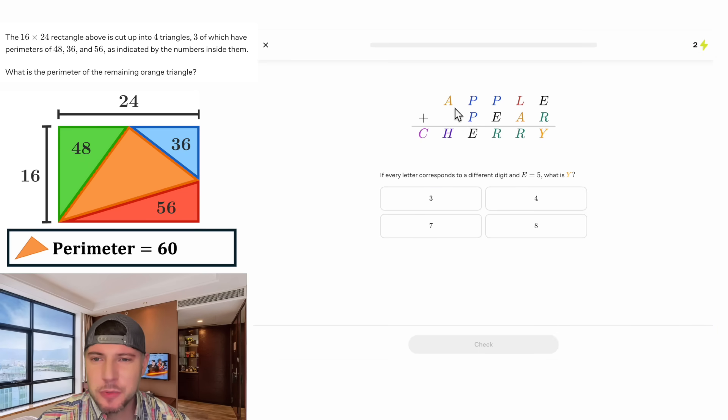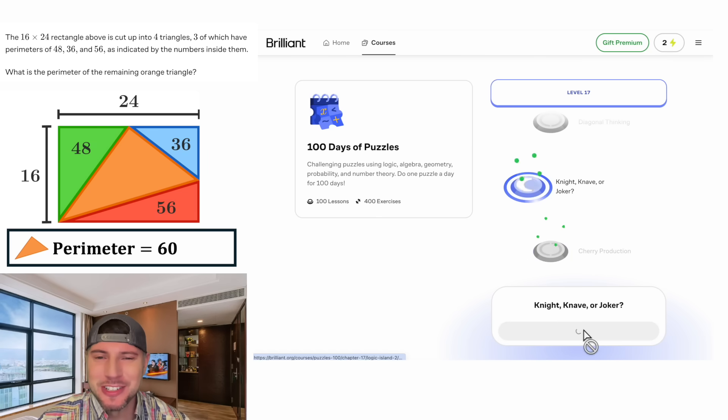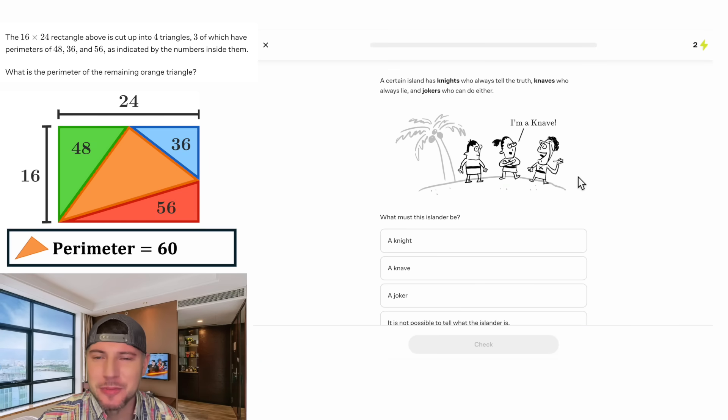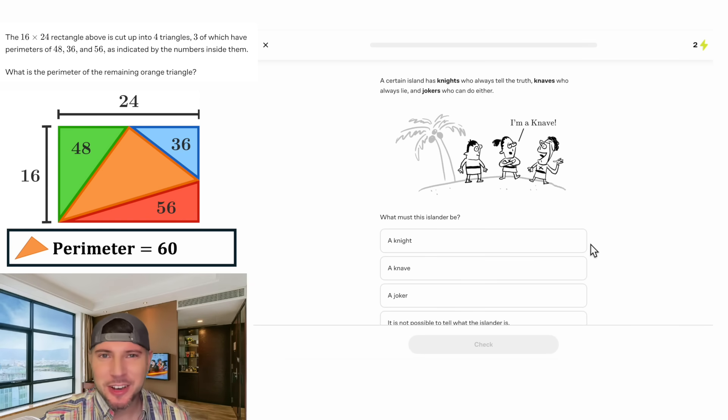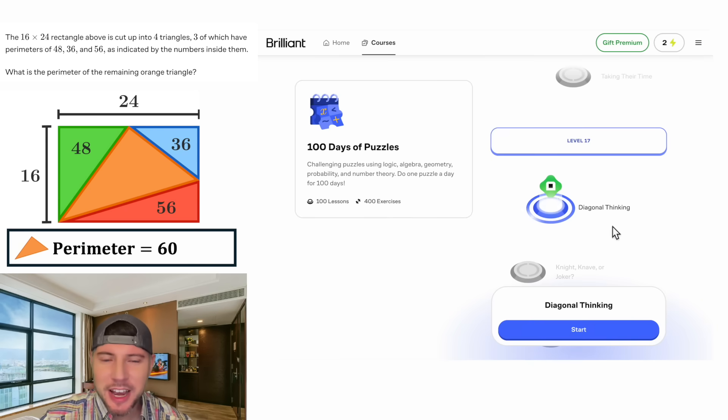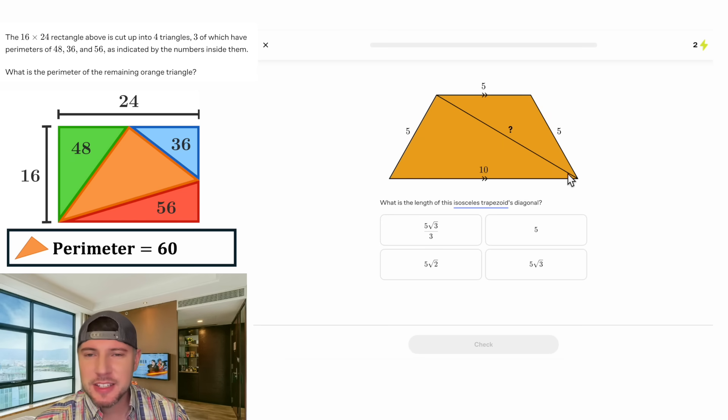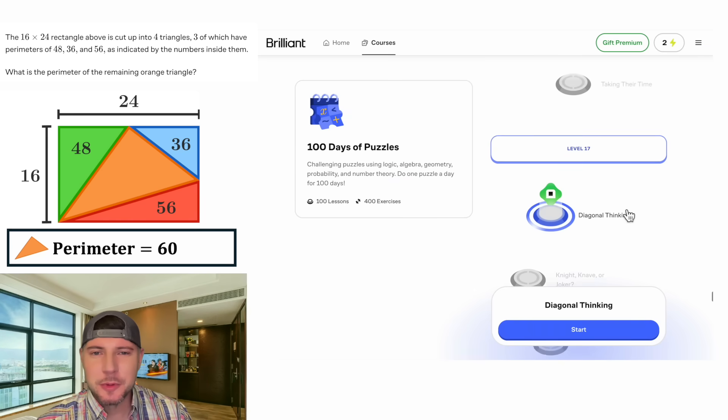This one was cool. This is one of those where every letter represents a unique single digit. They give you that E is 5 and they want you to solve for Y. And it's the same thing. You end up solving for one part of it and then you start working your way down. This one was fun too. Not super time consuming. You just had to think about it for a second. It's one of those where a certain type of person always tells the truth, one always lies, and then one can do either. And you're trying to solve who this person is. I solved this one pretty quickly, but it was still pretty fun. This diagonal thinking one was a little bit trickier. I had to do some work for this one. So we're given this isosceles trapezoid and you're trying to find the length of the diagonal. This one's kind of fun. I'm thinking about doing one of my next videos on this one. These are the most recent ones I just did. I still have all these ahead of me.